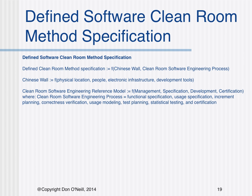The defined software cleanroom method specification: the defined cleanroom method specification is a function of Chinese wall and cleanroom software engineering process. The Chinese wall is a function of physical location, people, electronic infrastructure, and development tools. The cleanroom software engineering reference model is a function of management, specification, development, and certification, where the cleanroom software engineering process equals the functional specification, usage specification, increment planning, correctness verification, usage modeling, test planning, statistical testing, and certification.